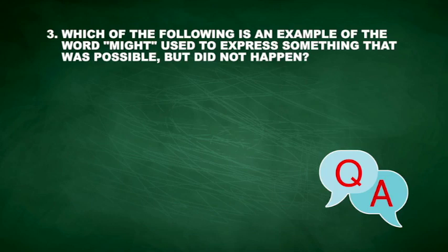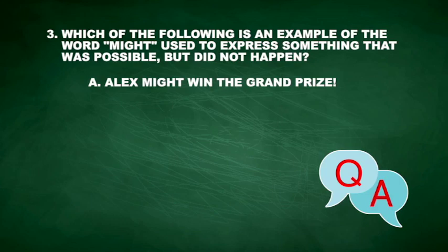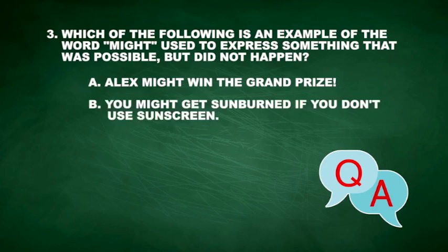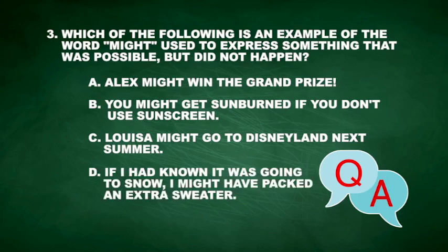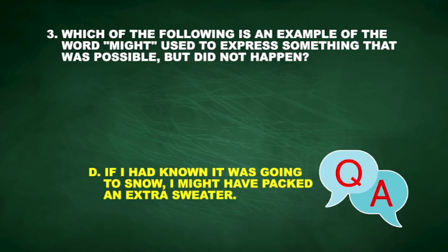Question 3: Which of the following is an example of the word 'might' used to express something that was possible but did not happen? A. 'Alex might win the grand prize.' B. 'You might get sunburned if you don't use sunscreen.' C. 'Louisa might go to Disneyland next summer.' D. 'If I had known it was going to snow, I might have packed an extra sweater.' The correct answer is D. It shows that something was possible but did not actually happen.